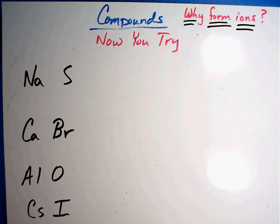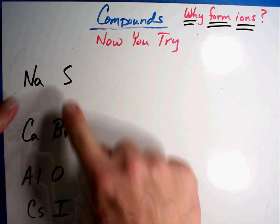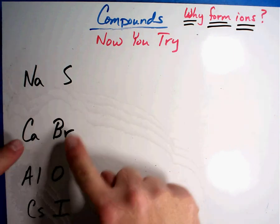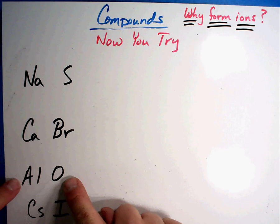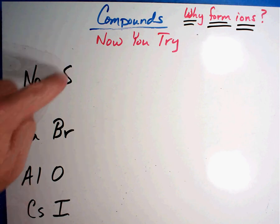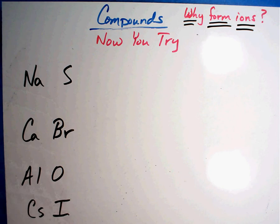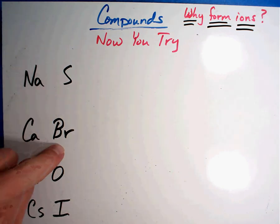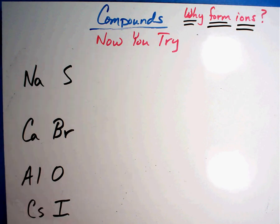Now it's your turn to try. I've given you two elements in each group, and I want you to figure out how they would form an ionic compound. All of the ones at the beginning are positive, and all of the ones at the end are always negative — it always works out positive, negative, positive, negative. Look up the charges on your chart, see if you can get the correct formula, and then see if you can get the name. We'll come back in a minute to see how you did.